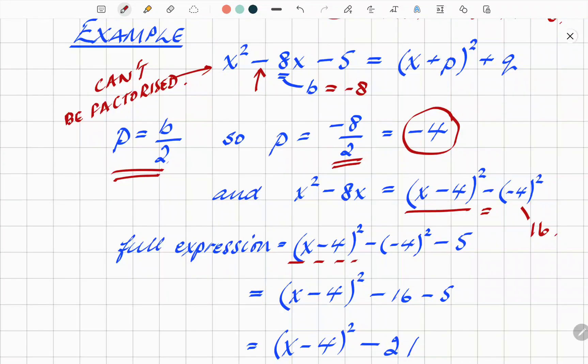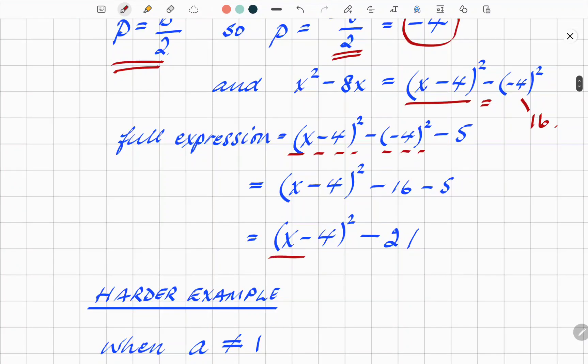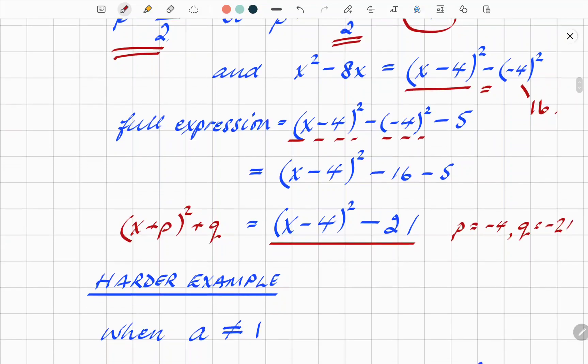So the full expression changes to (x - 4)² minus the -4 squared minus 5 from our original quadratic. That bit stays the same. Tidy it all up, replace the -4 squared with 16, and you get (x - 4)² - 16 - 5. And our final form is (x - 4)² - 21. So p equals -4, and q equals -21.